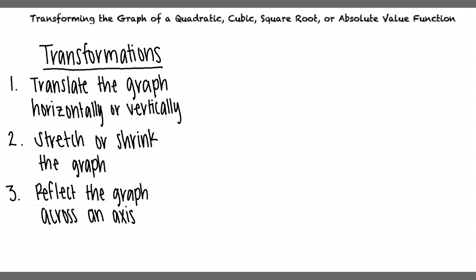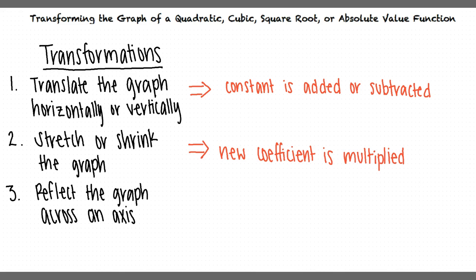How do we know when to do these transformations? We translate the graph horizontally or vertically if a constant is added or subtracted. We stretch or shrink the graph if a new coefficient is multiplied, and we reflect the graph across an axis if the coefficient is negated.